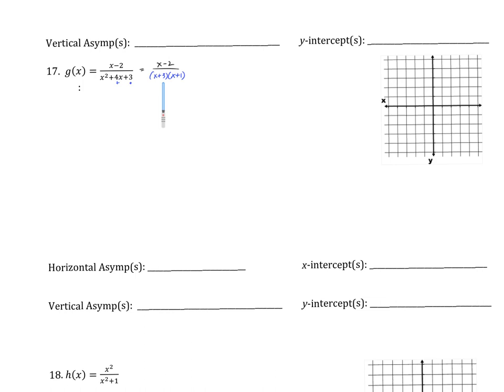Vertical asymptote is when the bottom equals zero. The denominator equals zero. Whichever wording helps you, write it. When is this denominator going to equal zero? Negative three and negative one. I'm going to go put that in my picture.